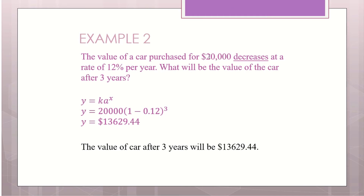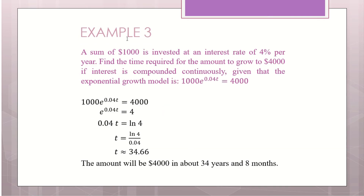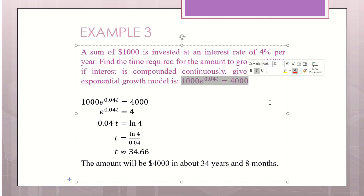Example 2: 20,000 is K. Since it's a decrease, A must be less than 1, so it will be 0.88 because it's reduced by 12%. To find the value of the car after 3 years, plug it into the formula and you'll be able to get the answer. Always compare it back to the Y equals K times A to the X formula.